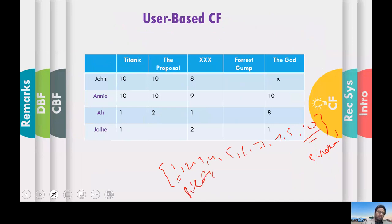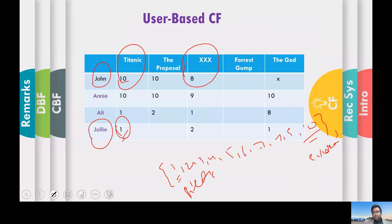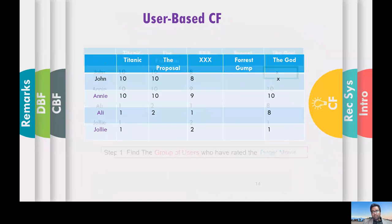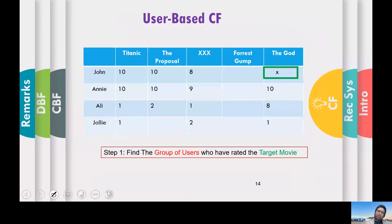This is the data they have given you. They want you to build a recommender system using collaborative filtering and want to know how John is going to rate The Guard.